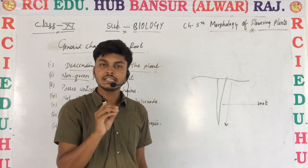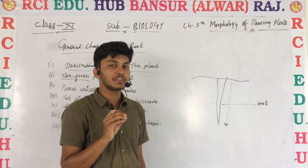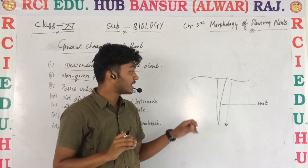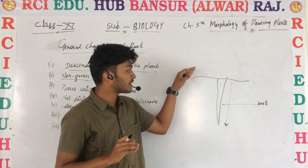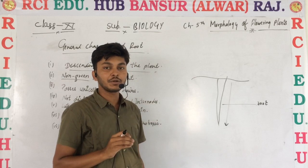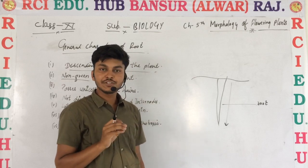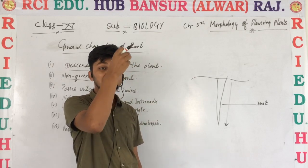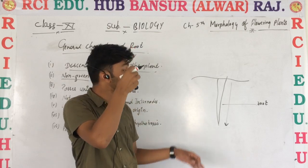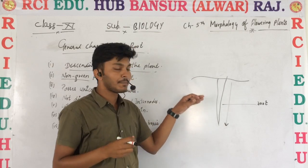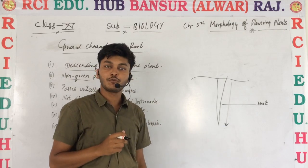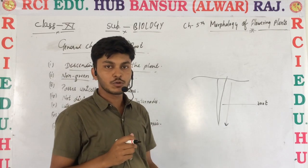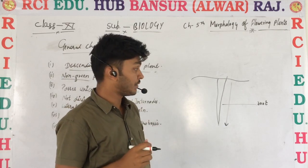Roots are dependent on the leaves for food. The leaves synthesize the food, and that food travels from the leaves down to the root by the help of phloem. We will also discuss this process later on.